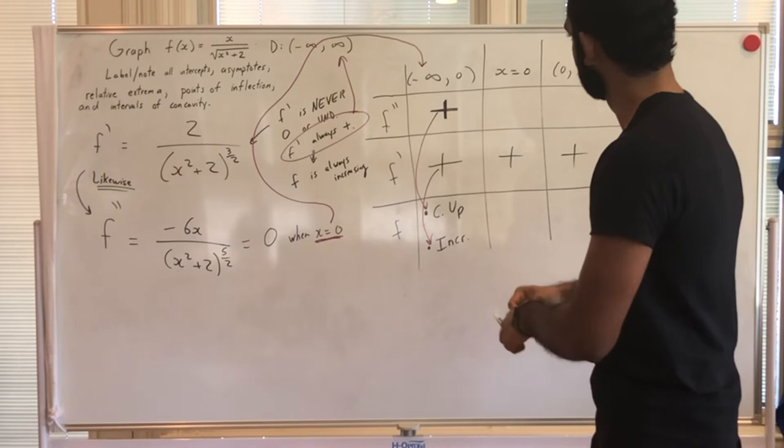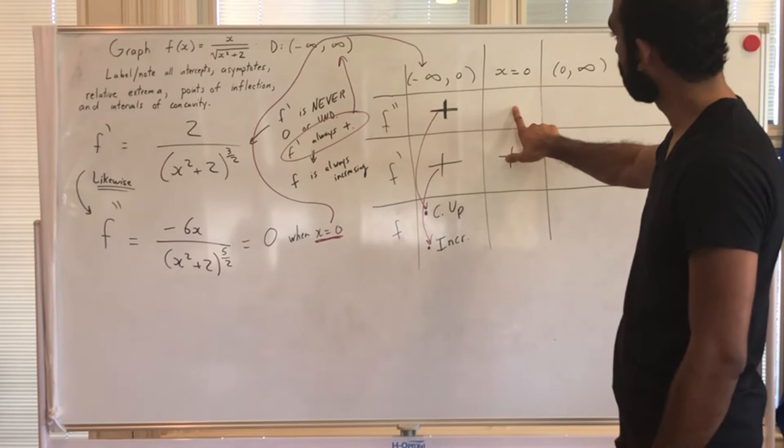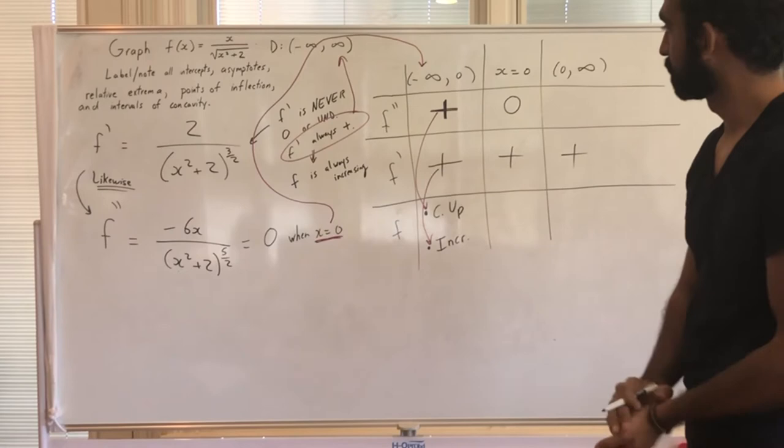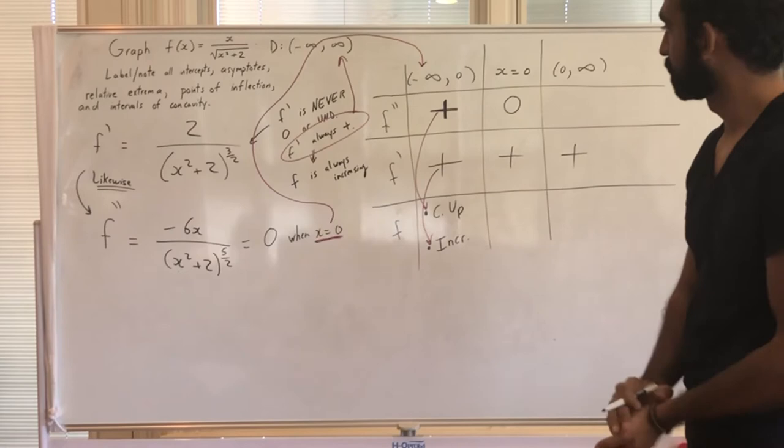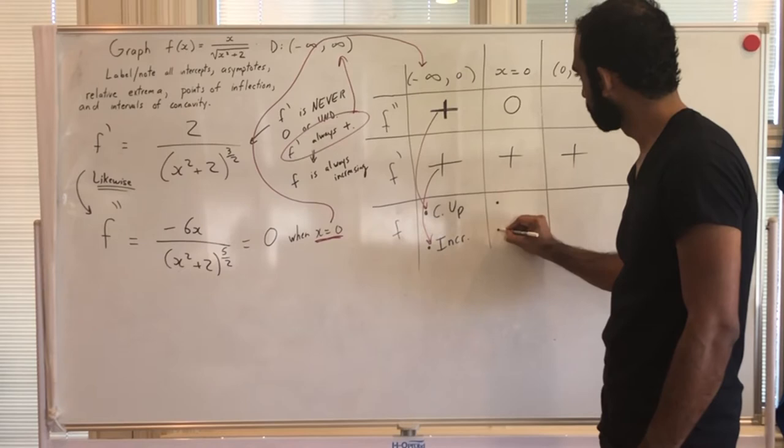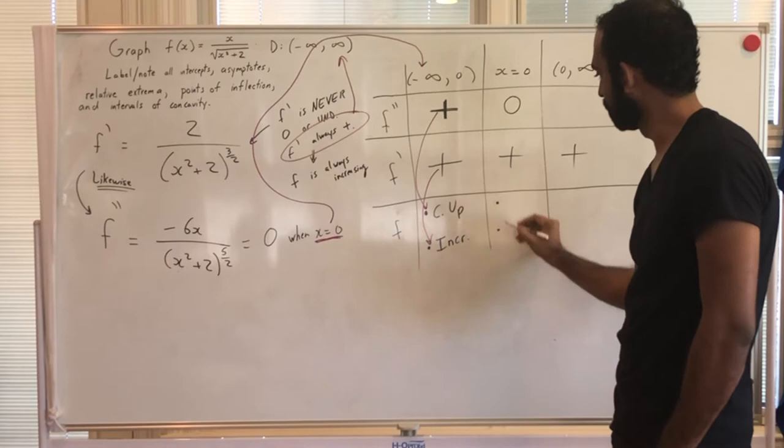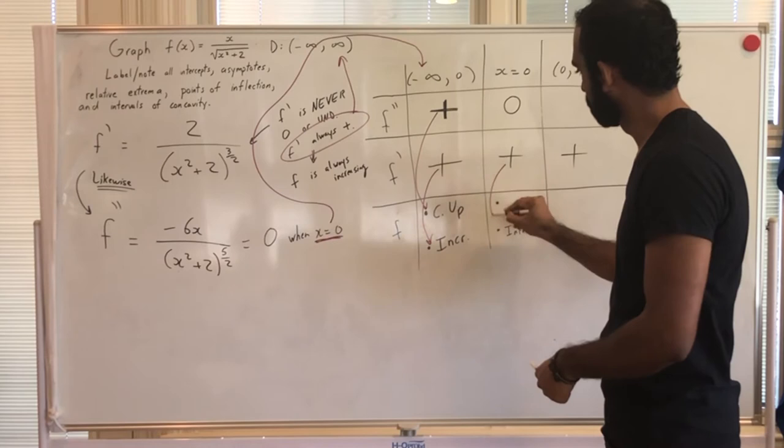Increasing all across the board. At x = 0, f'' equals zero — we already decided it's a possible point of inflection. The first derivative is always positive, so f is still increasing at that point.